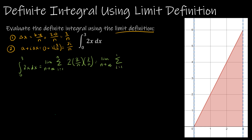The summation as i goes from 1 to n of 18i over n squared. I can take out the 18 over n squared and bring it out to the front. It's up to you whether or not you do that step, but what that leaves me with on the inside is just i.